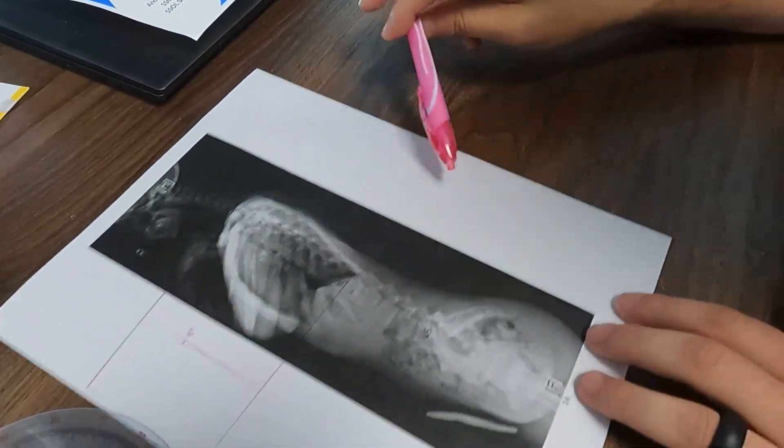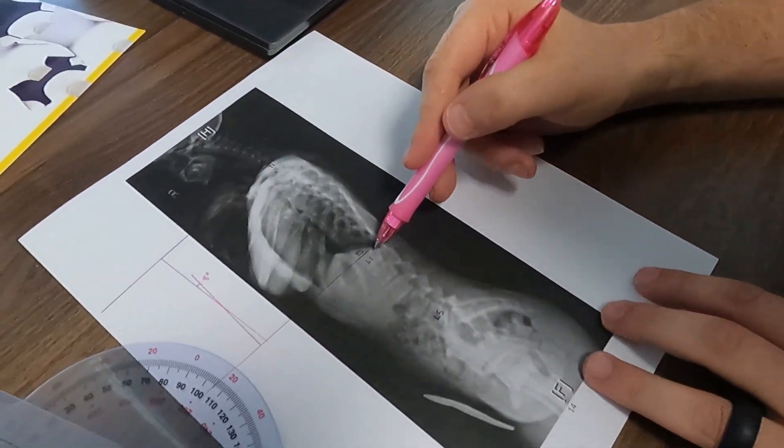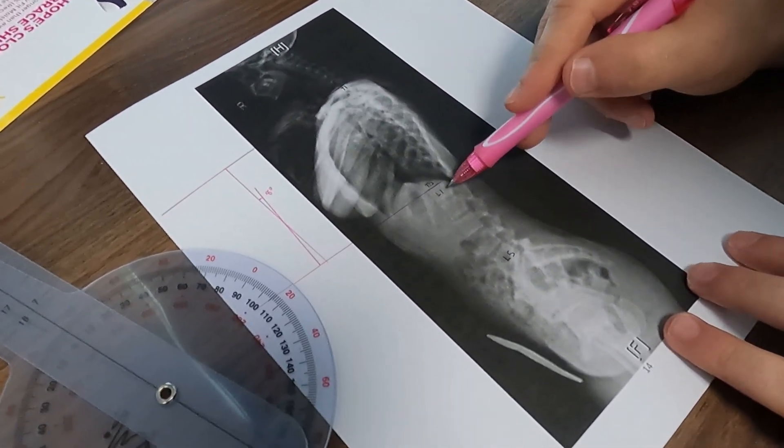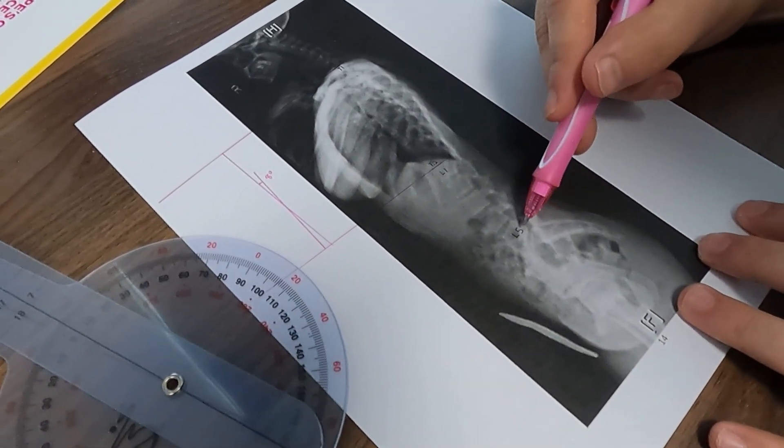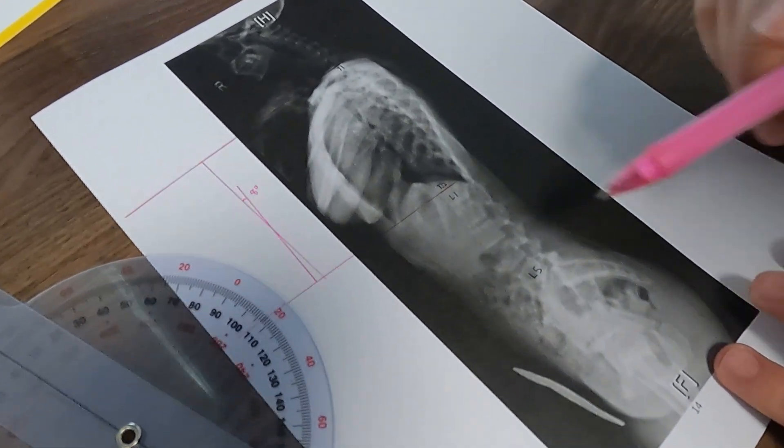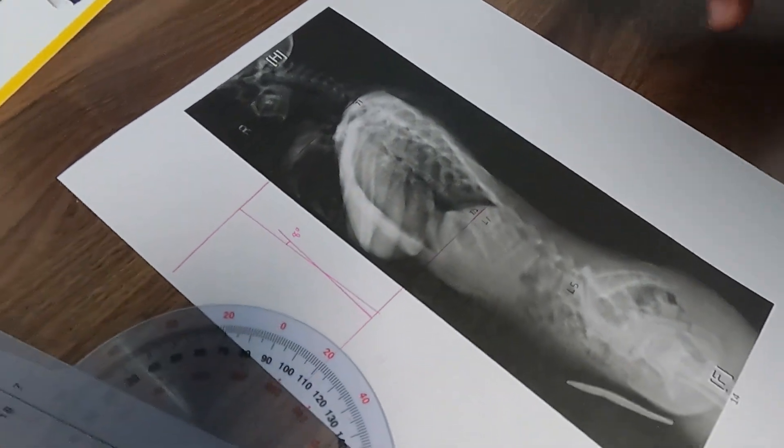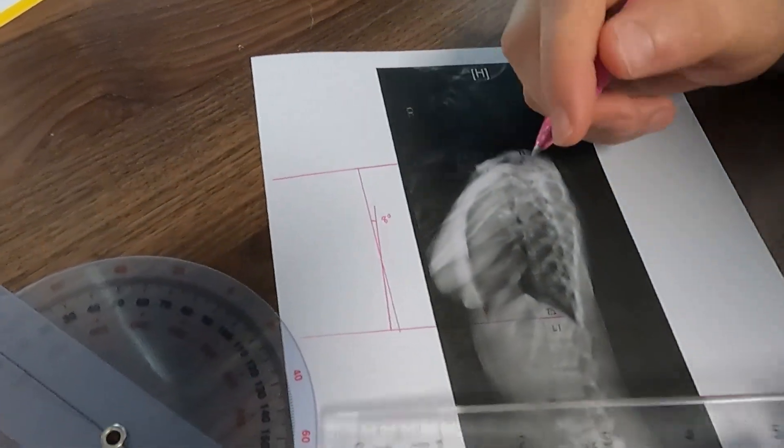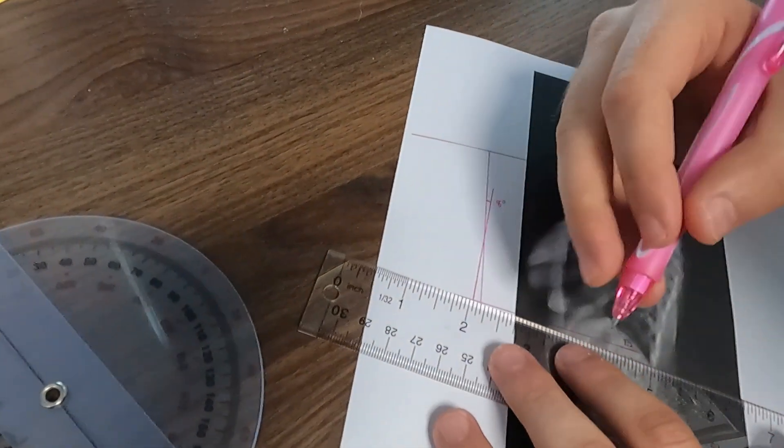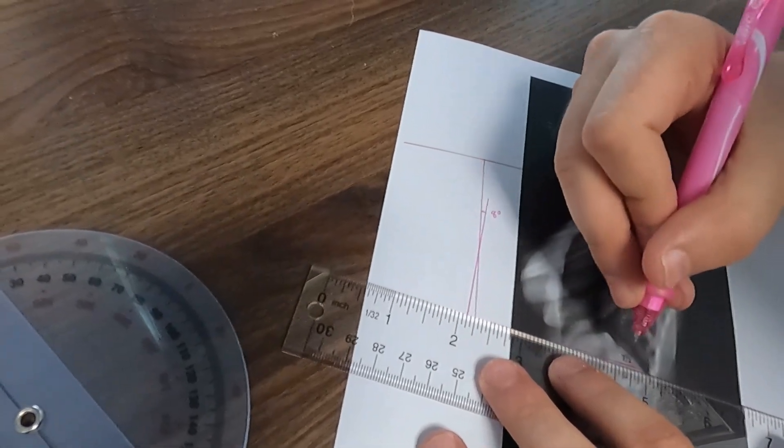Now for our lordosis, we want to go down and we want to find L1 as our first location. And L5 is going to be the bottom of the lumbar spine. So once we find L1, we can take the upper end vertebrae or the upper end plate of this vertebrae.